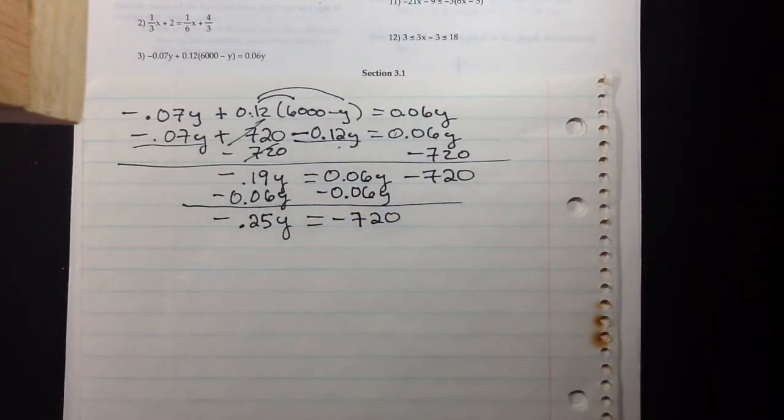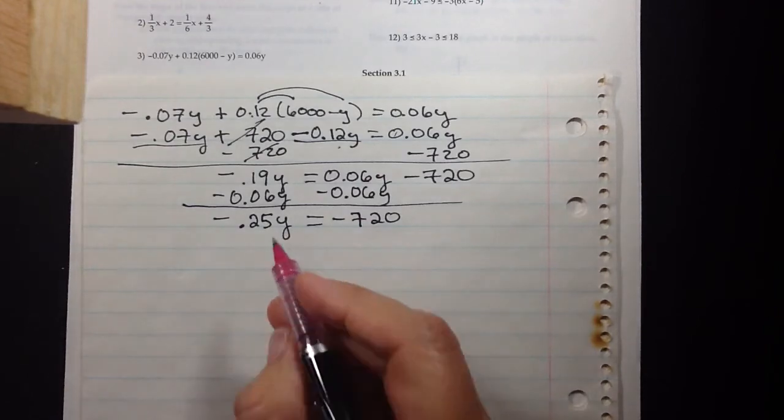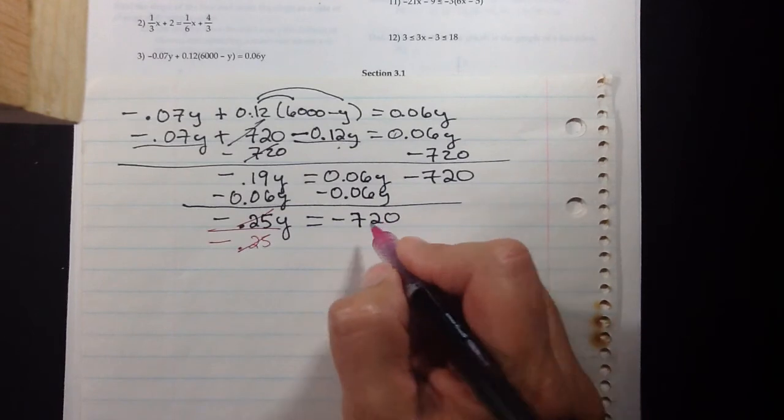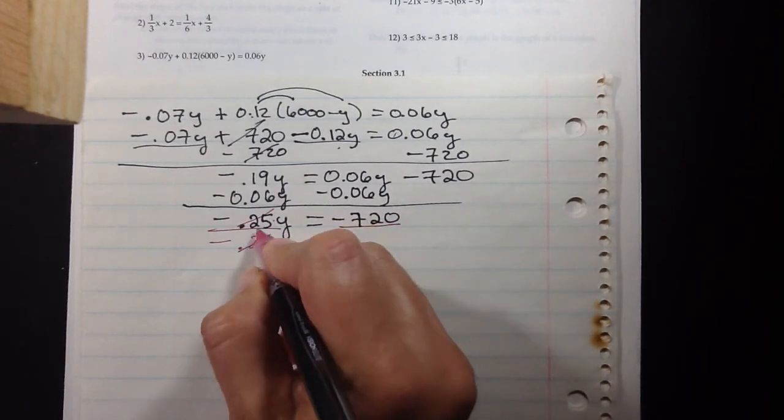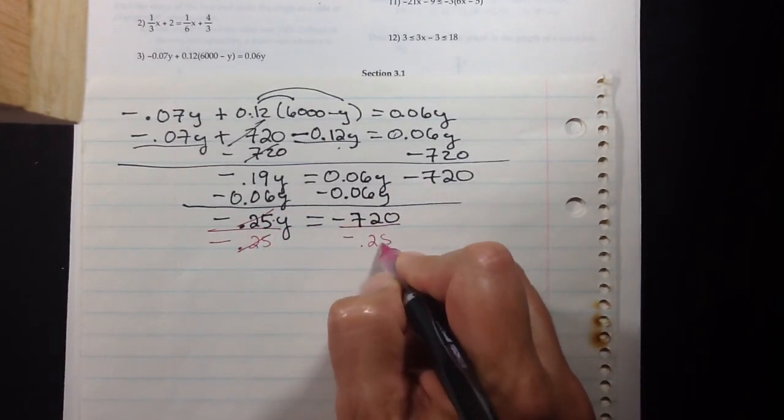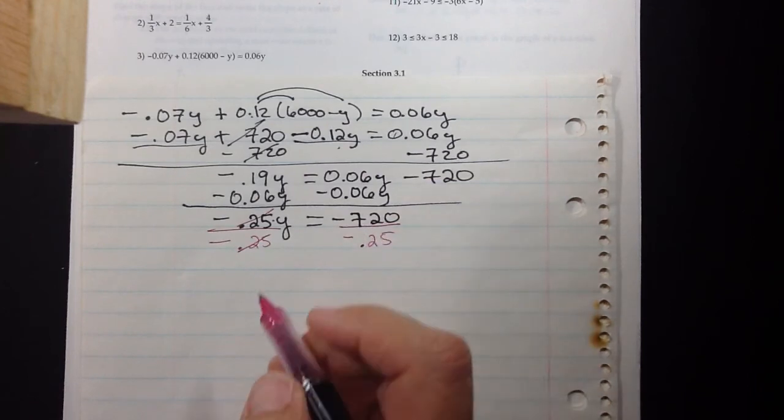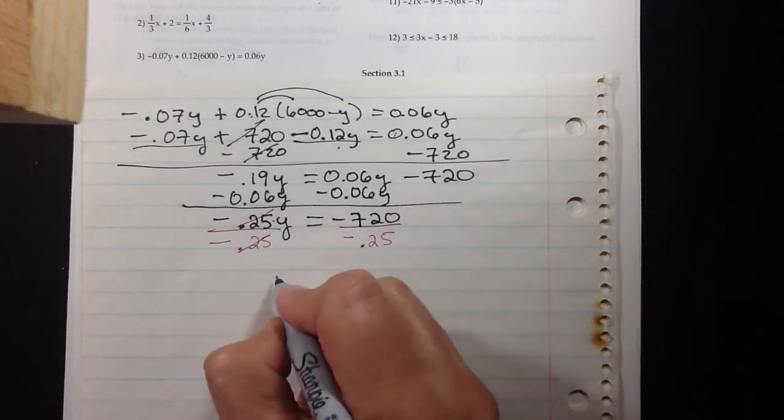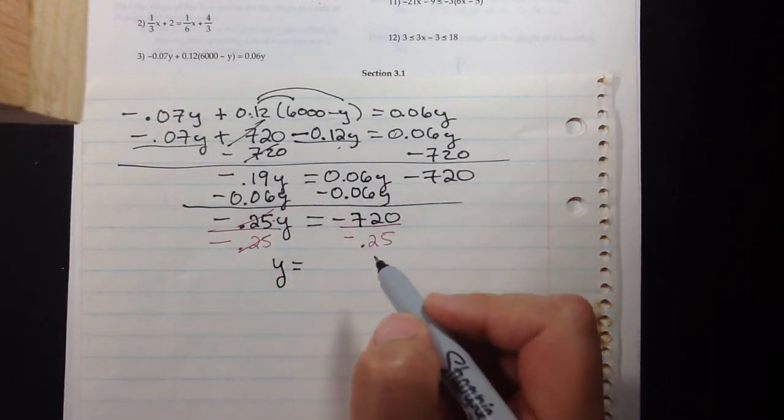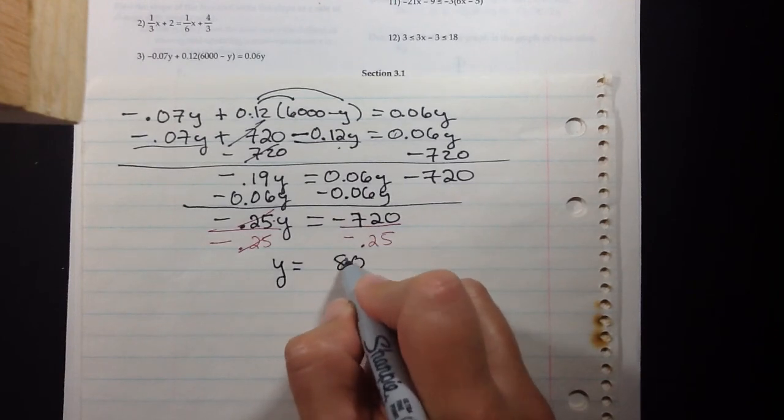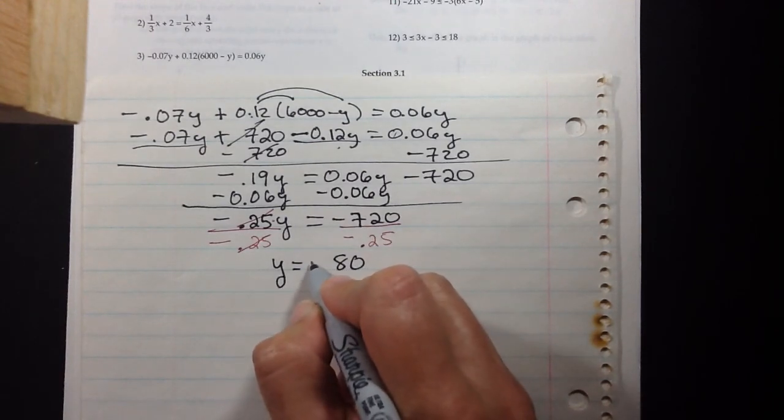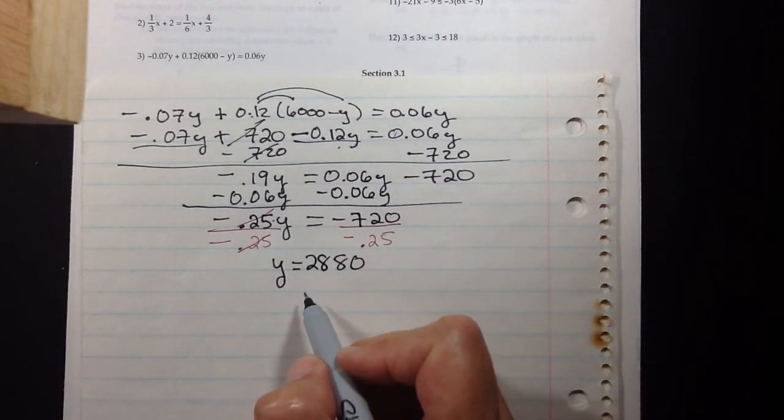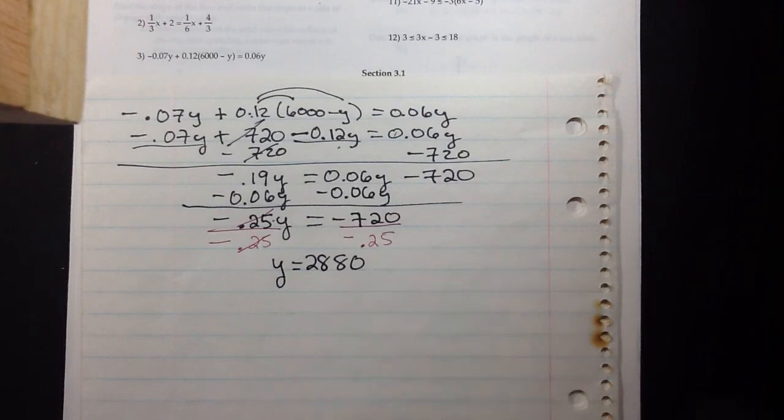Dividing by negative 0.25, we'll be able to cancel out that coefficient on the y term. Two negatives divide positive, and this is actually dividing by 1/4, which is the same as multiplying by 4. So that answer is 2880.